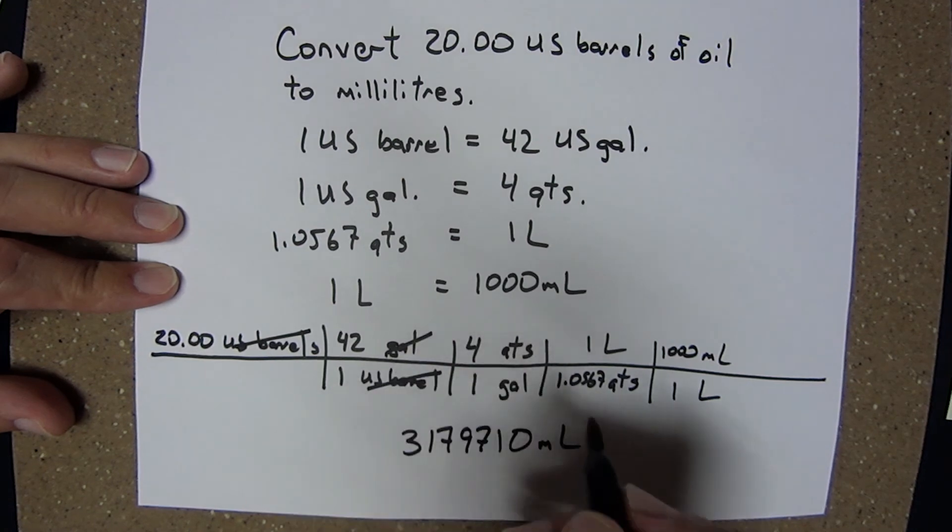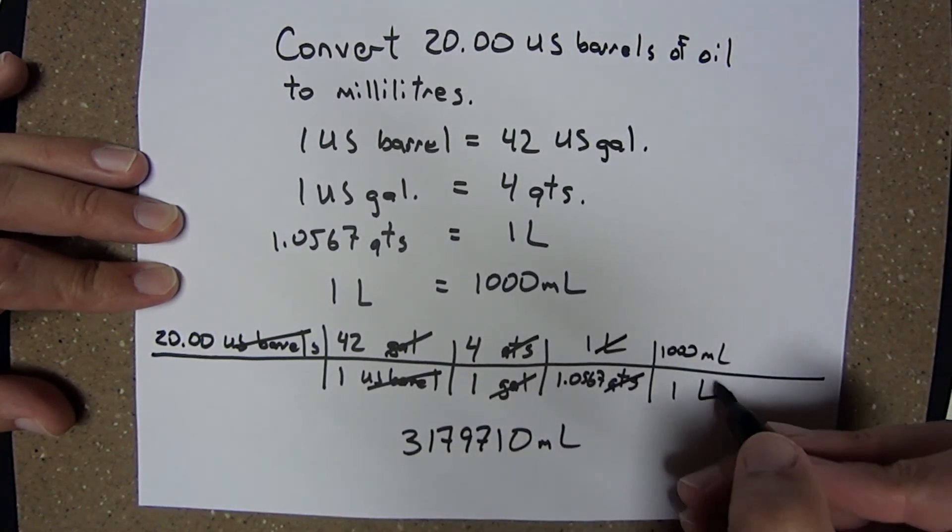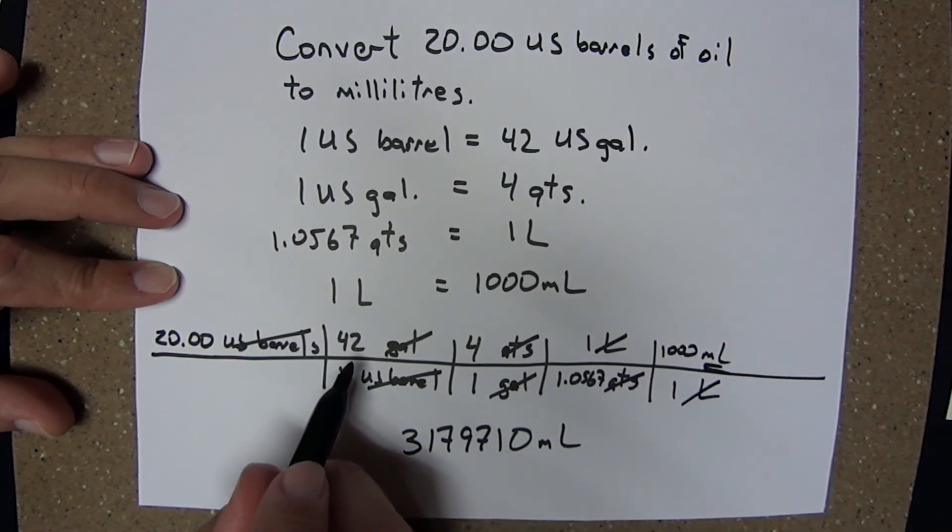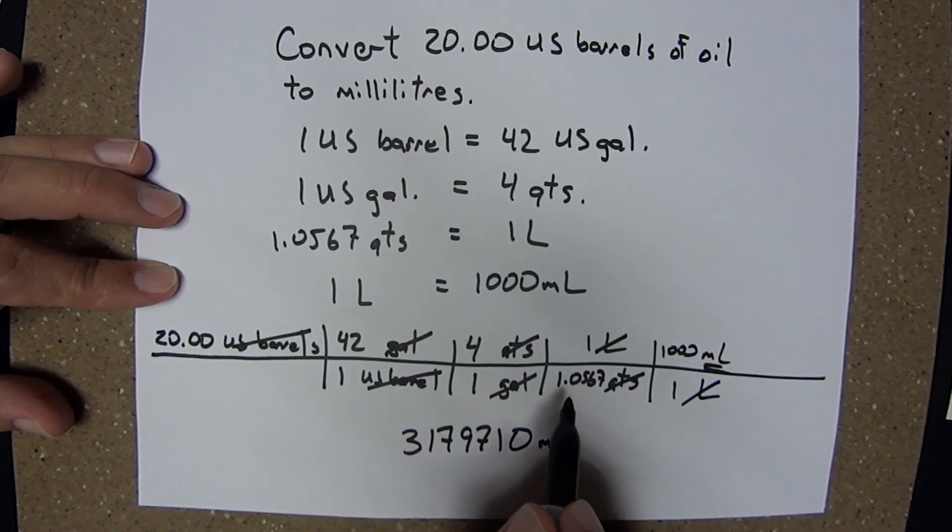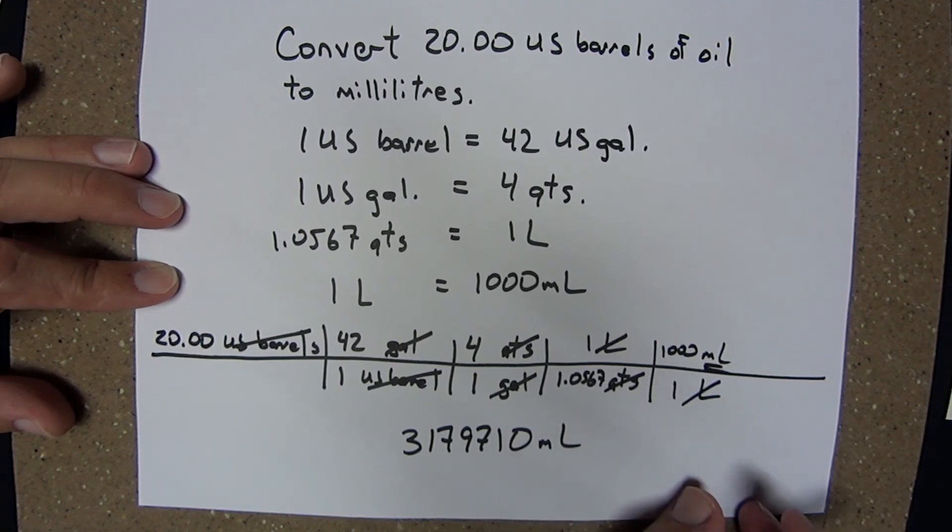And again, let's watch what happened to our units. US barrels canceled US barrels. Gallons canceled gallons. Quarts canceled quarts. Liter canceled liter. I'm indeed left with milliliters. Yes, 42 gallons is equivalent to one US barrel. Four quarts is one gallon. 1.0567 quarts in a liter. 1,000 milliliters in a liter.